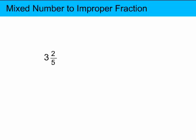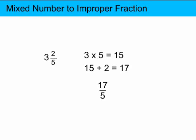One last example: 3 and 2 fifths. Again, you could draw out three whole parts and divide them into fifths, then add the 2 fifths. Or you could just multiply the whole number by the denominator 5 to get 15, add the numerator 2 — 15 plus 2 is 17 — and put it over the denominator 5, or 17 fifths. So either method will give you exactly the same result. And that's how you convert a mixed number to an improper fraction.